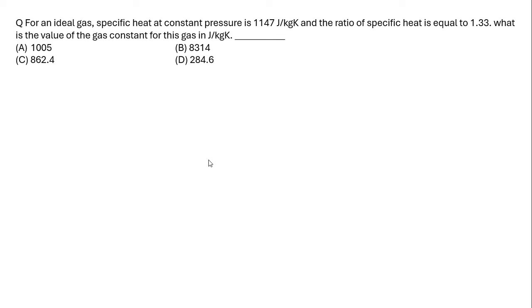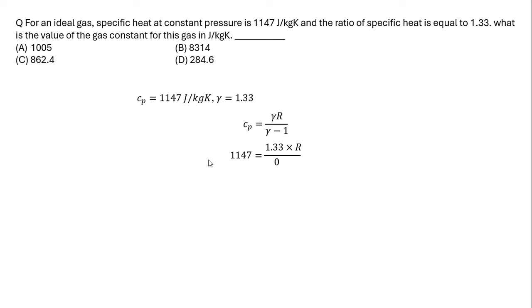For an ideal gas, the specific heat at constant pressure CP = 1147 J/kg·K and the ratio of specific heats gamma = 1.33. What is the value of the gas constant R in J/kg·K? Using the relationship CP = γR/(γ−1), we get 1147 = 1.33 × R / 0.33, which gives R = 284.6 J/kg·K.